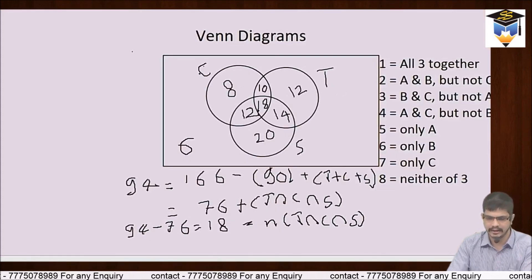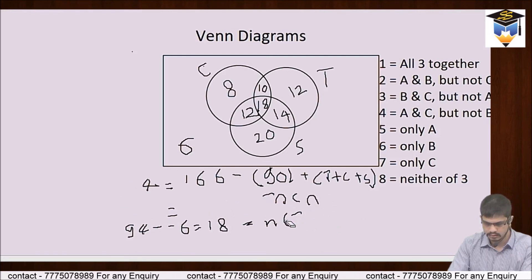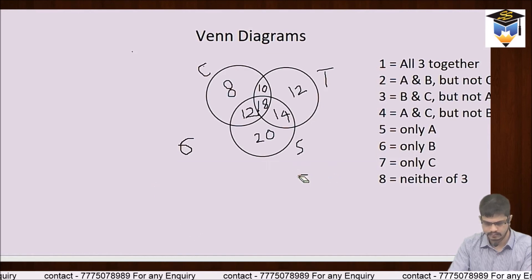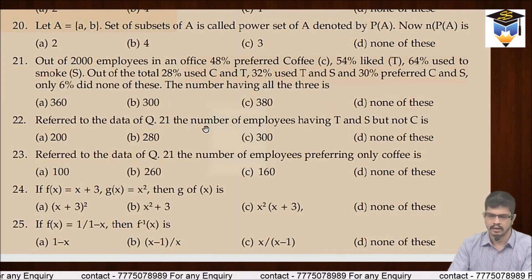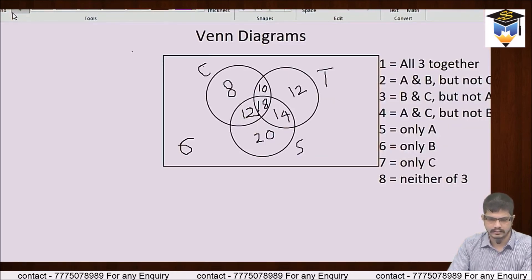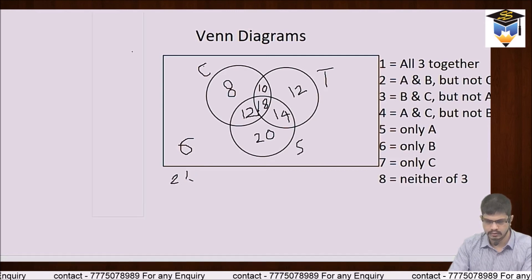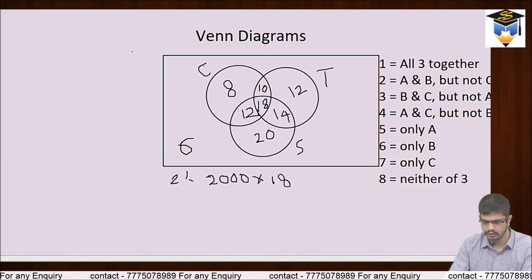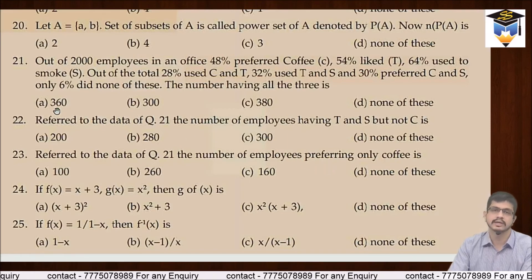Question 21: the number having all 3. All 3 hume pata hai — 18%. Toh 2000 × 18% = 2000 × 18/100 = 18 × 20 = 360. Option A, 360, is your answer.